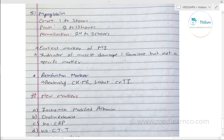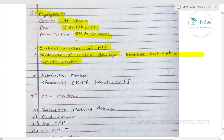The last marker is myoglobin, which is the earliest marker of myocardial infarction. It increases within 1–3 hours of MI, with peak at 8–12 hours and returning to normal by 24–30 hours. However, myoglobin is not cardiac specific — it is just an indicator of muscle damage. It is sensitive but not specific.